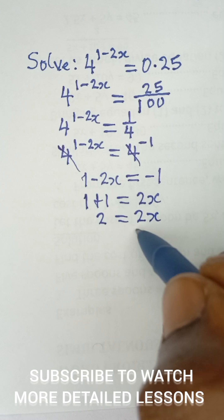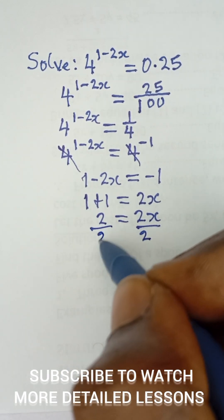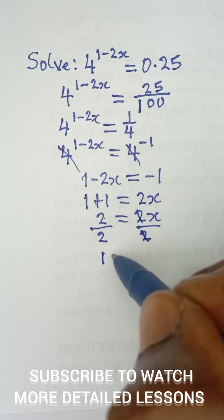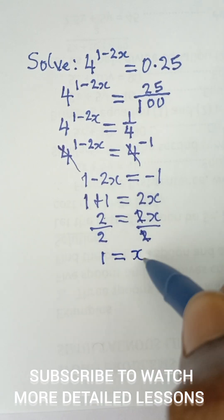When I divide both sides by 2, divide this side by 2 as well. 2 cancel 2, I have 2 over 2 is 1, and that is equal to x.